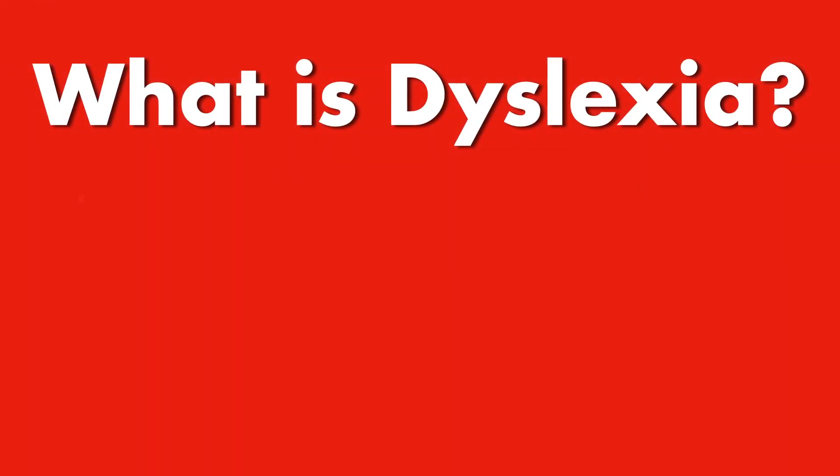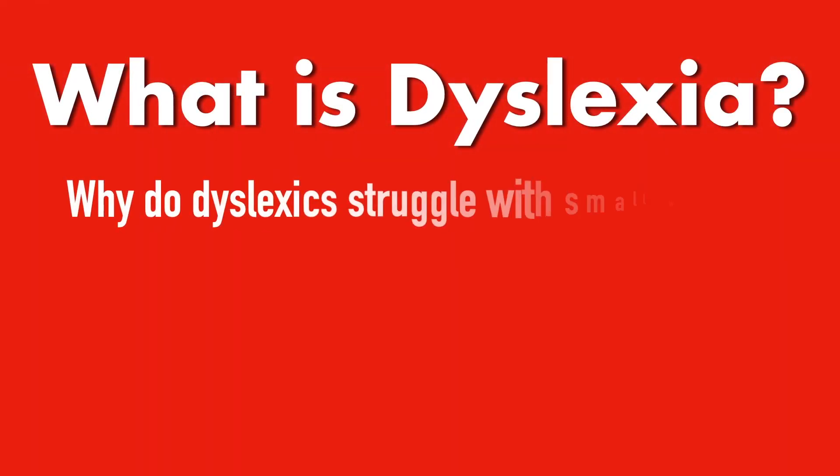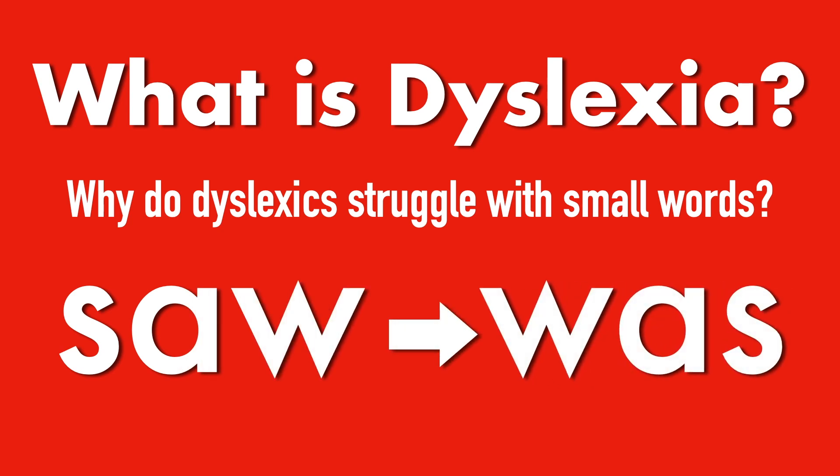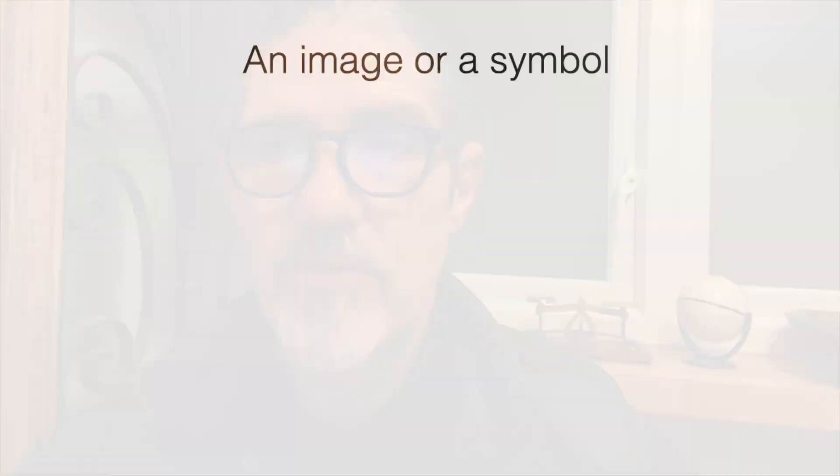What is dyslexia? Why do dyslexics struggle with smaller words? Why do they turn 'saw' into 'was'? In order to understand the problem, we need to understand the difference between an image and a symbol. Because a visual thinker can easily think with an image, but they can struggle with a symbol.